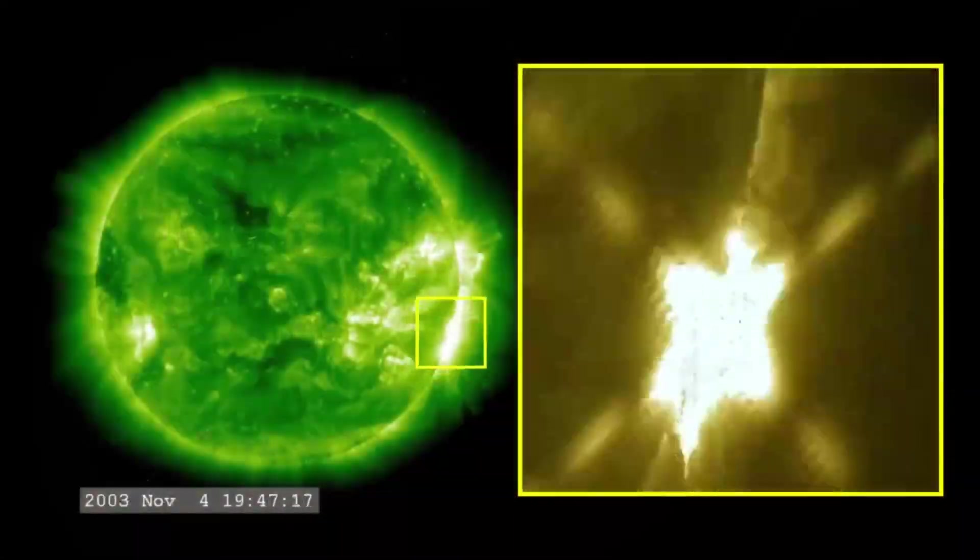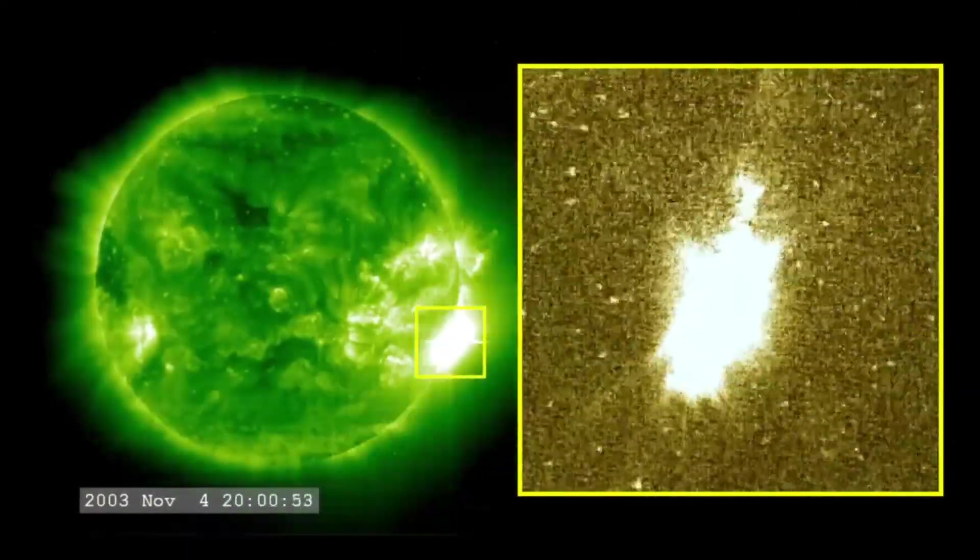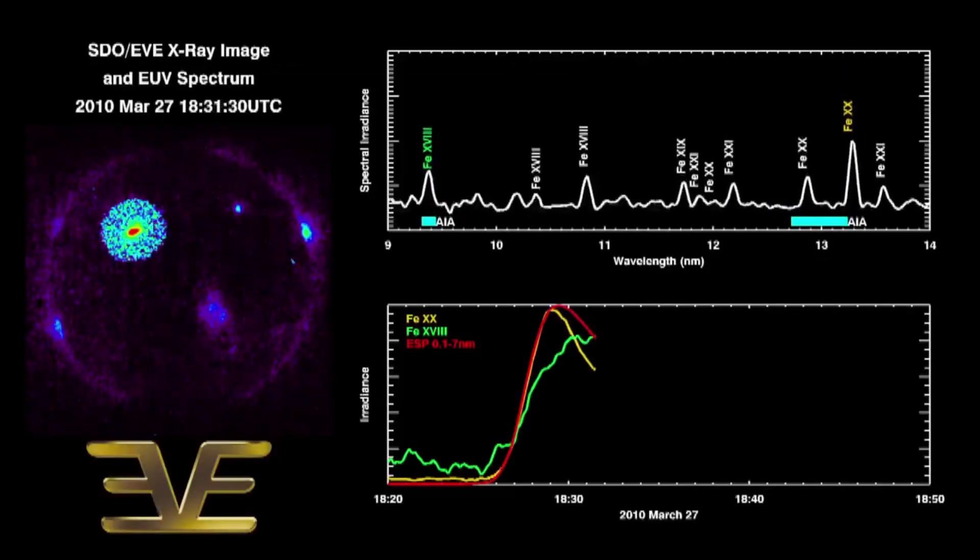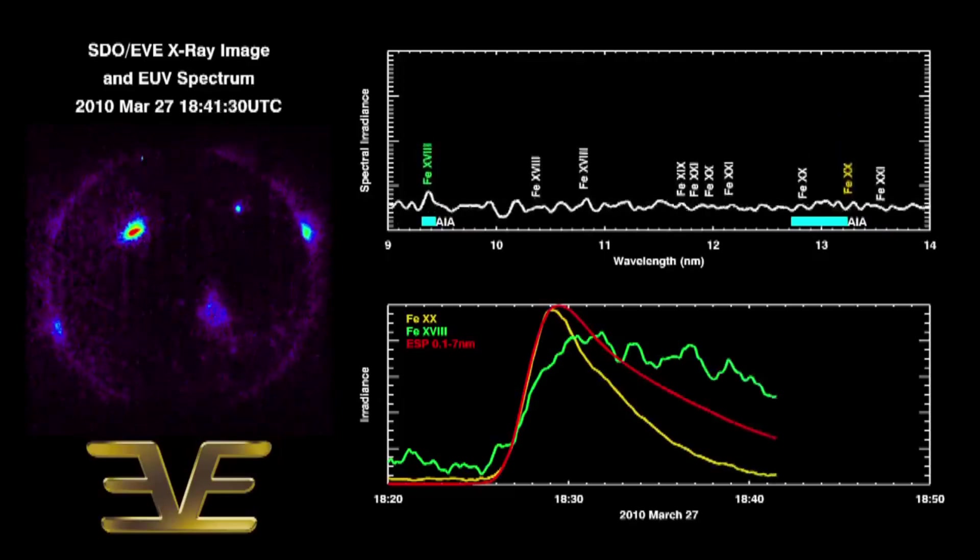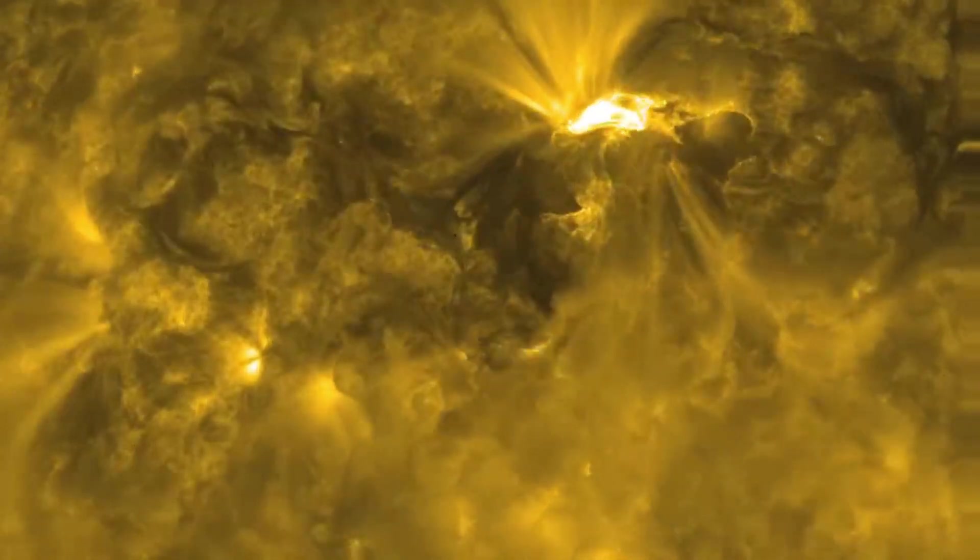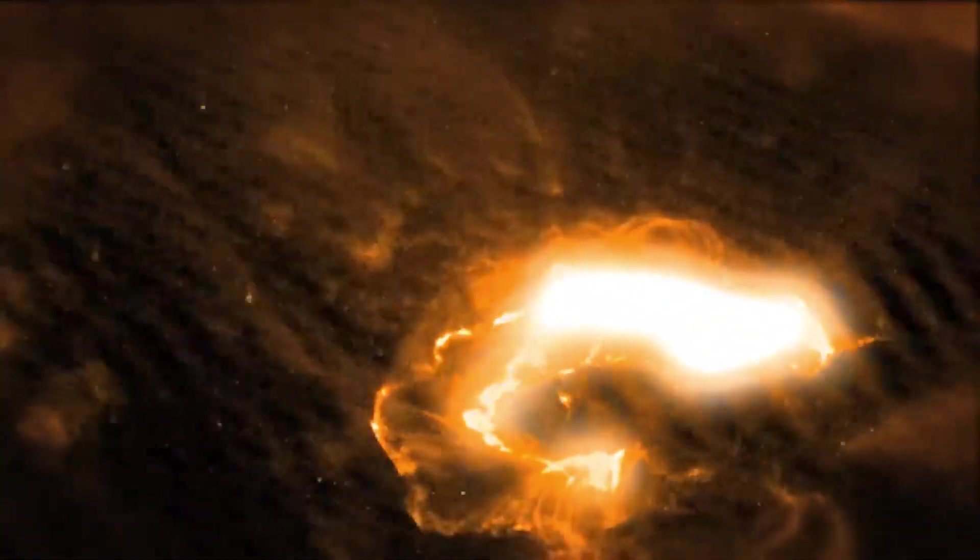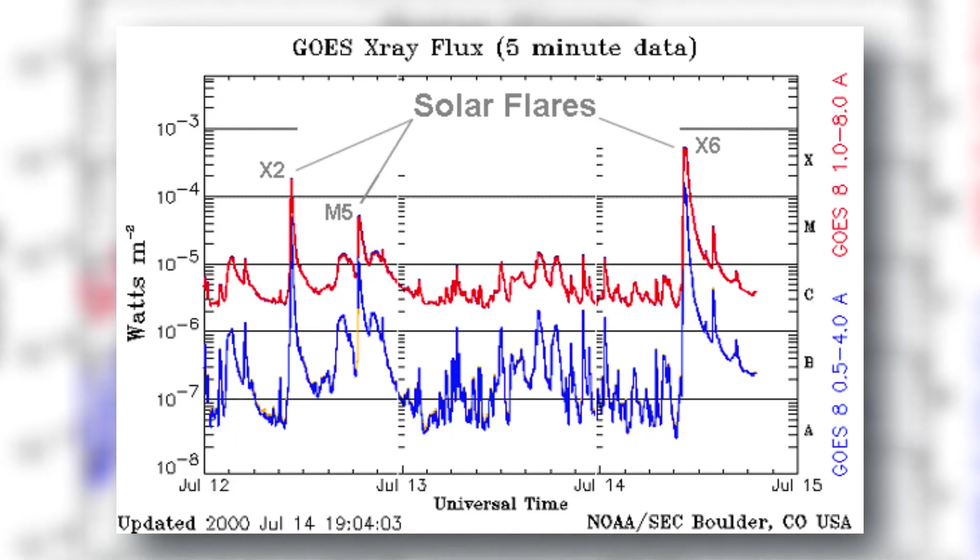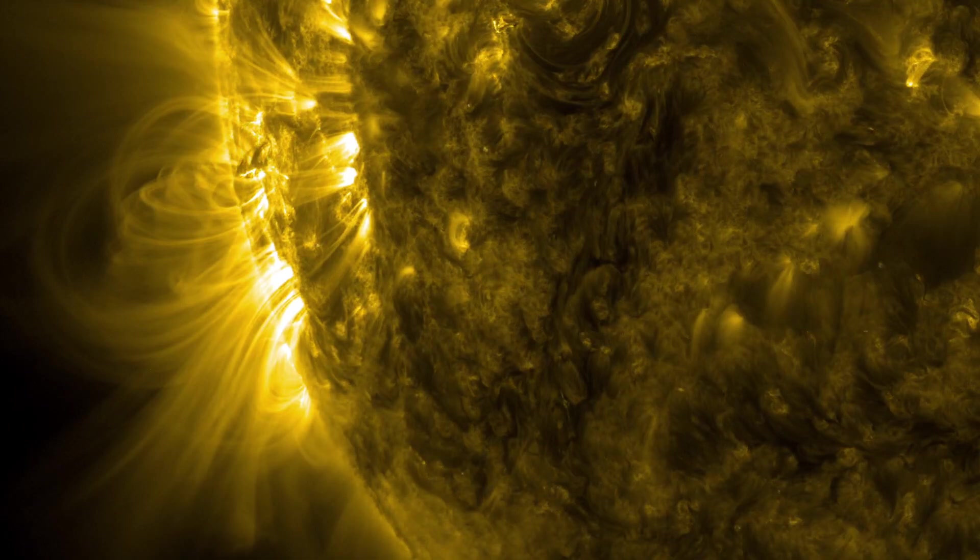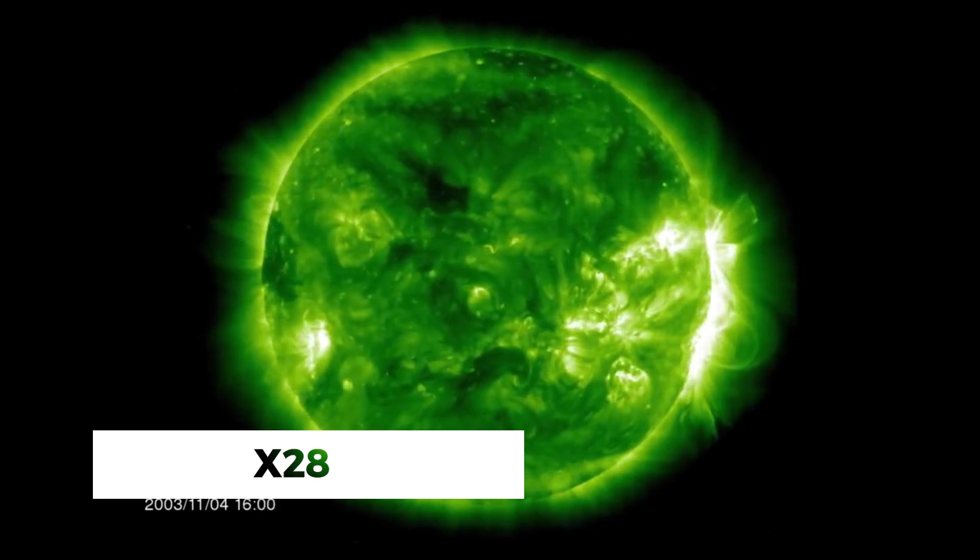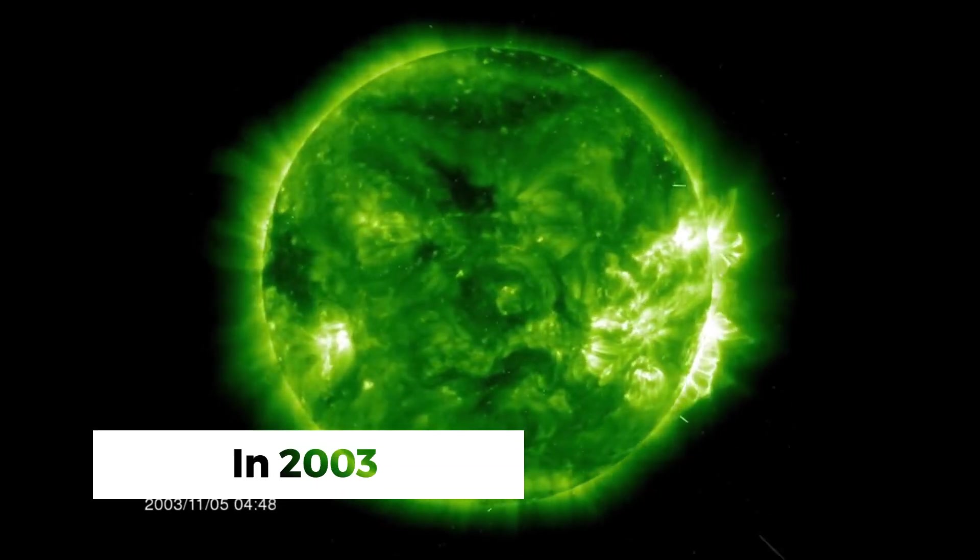It's important to highlight that X-class flares represent the most intense category of solar flares. In contrast to M-class flares with a defined upper limit, X-class flares do not have a maximum cap. This means that the intensity of X-class flares can vary widely, ranging from X1 to X10, X50, or potentially even higher. The most powerful solar flare recorded with direct measurements from space reached an intensity of X-28, which took place in 2003.